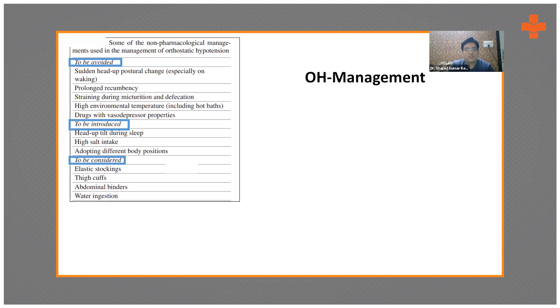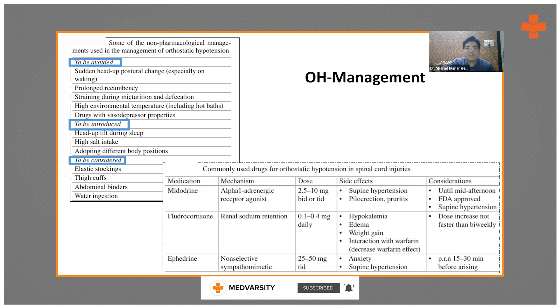If this is not managed by non-pharmacological measures, you can use medicines. Midodrine is the most commonly used - it's an alpha-1 adrenergic receptor agonist, used in a dose of 2.5 to 10mg BD or TID. Note that higher doses might lead to supine hypertension, piloerection, and pleuritis. This is FDA approved for supine hypertension.